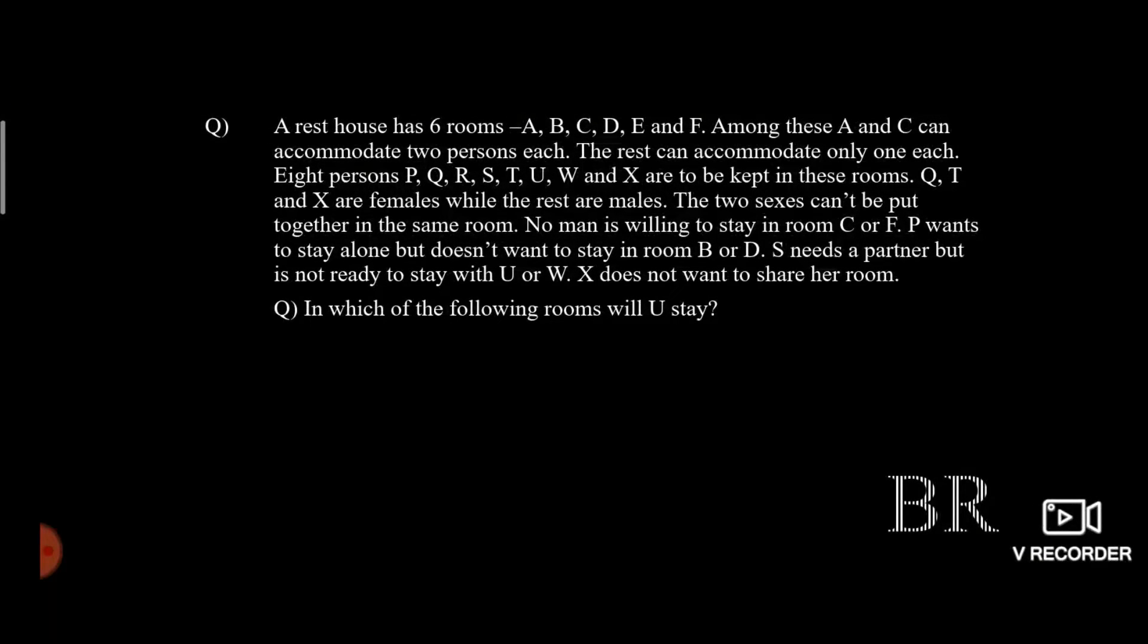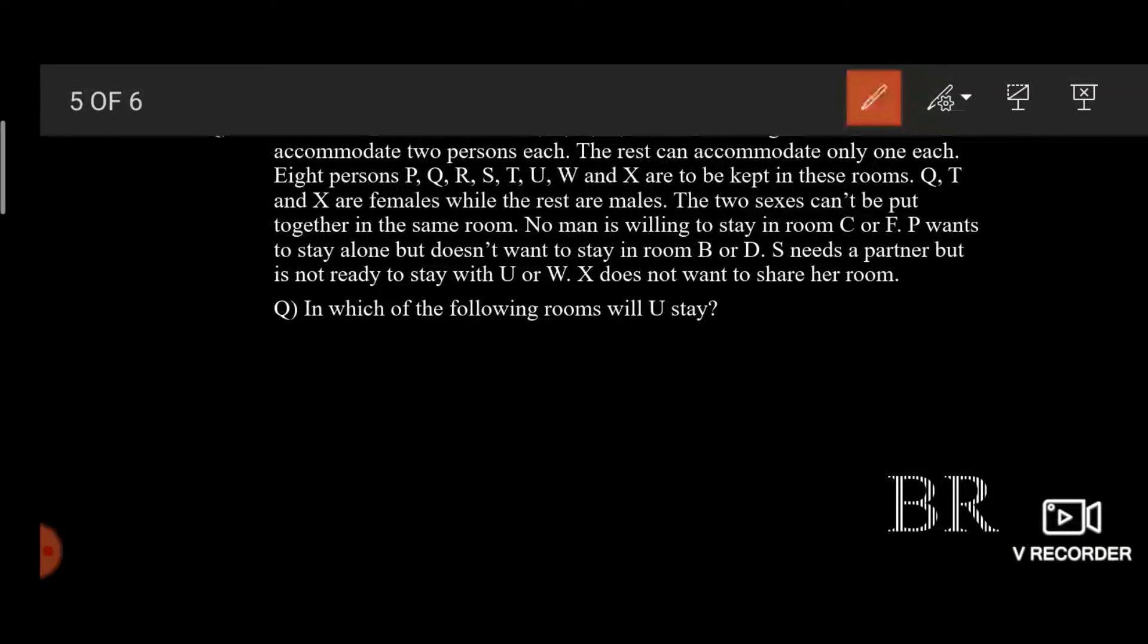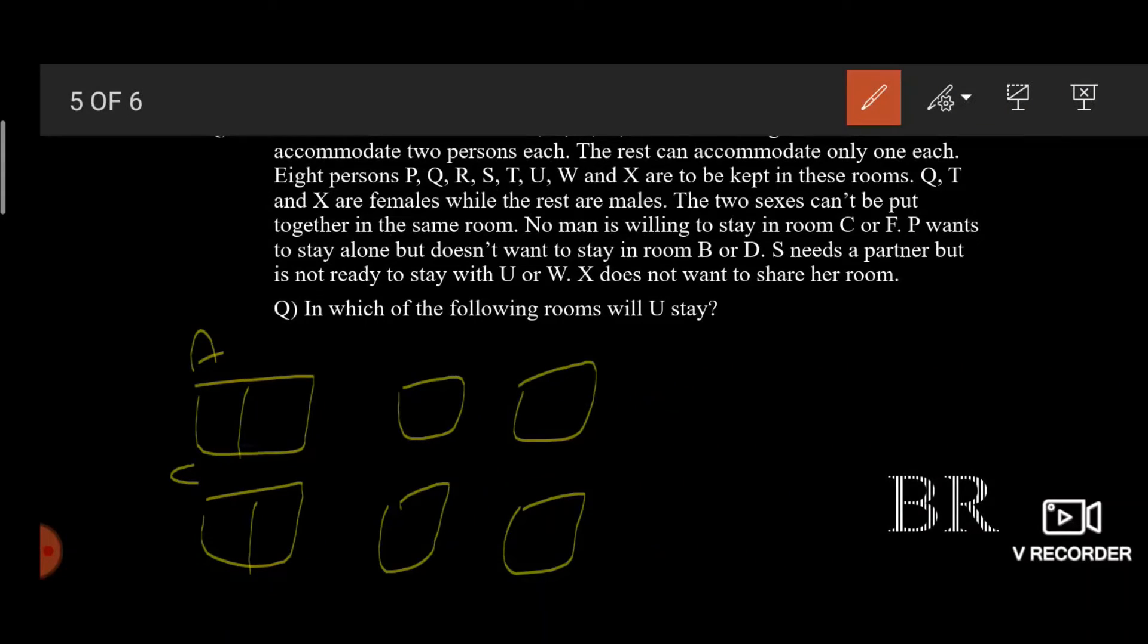A rest house has six rooms A, B, C, D, E and F. Among these A and C can accommodate two persons each. The rest can accommodate only one each. So these are the six rooms in the guest house. So according to the question, there are six rooms. A and C can accommodate two persons each, and B, E, D, F can accommodate only one person.